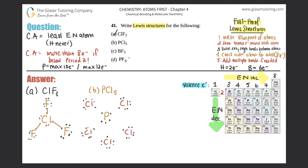Now we bond only single bonds — two electrons make a single bond between each chlorine and phosphorus. Check the outer chlorines: each has two, four, six, eight electrons — all good. Now check phosphorus in the center: two, four, six, eight, ten. Can that be allowed? Yes, because phosphorus as the central atom can have more than eight, with a max of ten. Part B is done.